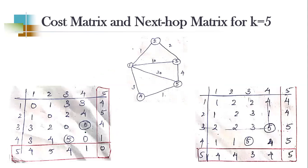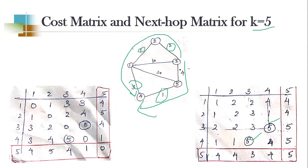For k=5, the last loop: 3→4 previously had cost 6 via path k=2 (2+1+3=6). Via path 5, the new cost is 4+1=5, which is less than 6, so it is replaced with 5 and the next hop matrix is updated. These are the final cost and next hop matrices after all five iterations for five nodes. In the next video we will move on to coding this algorithm — watch the next part for the code.